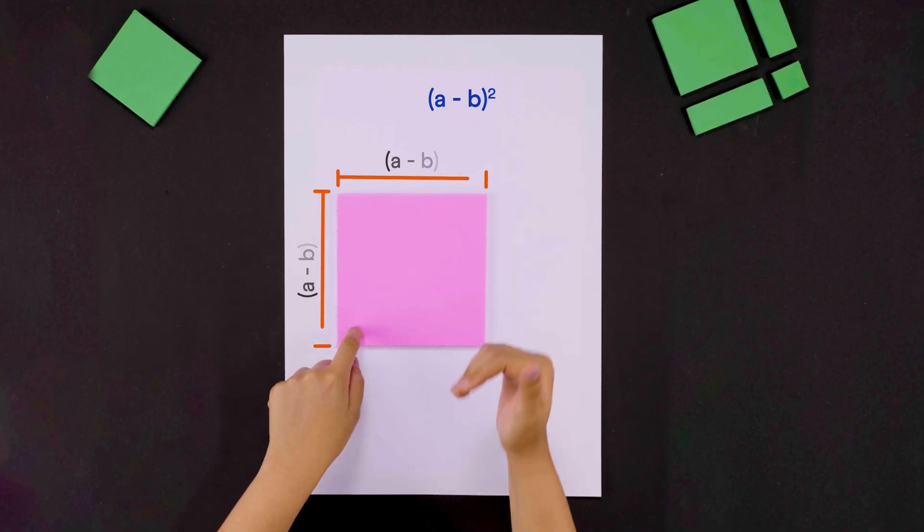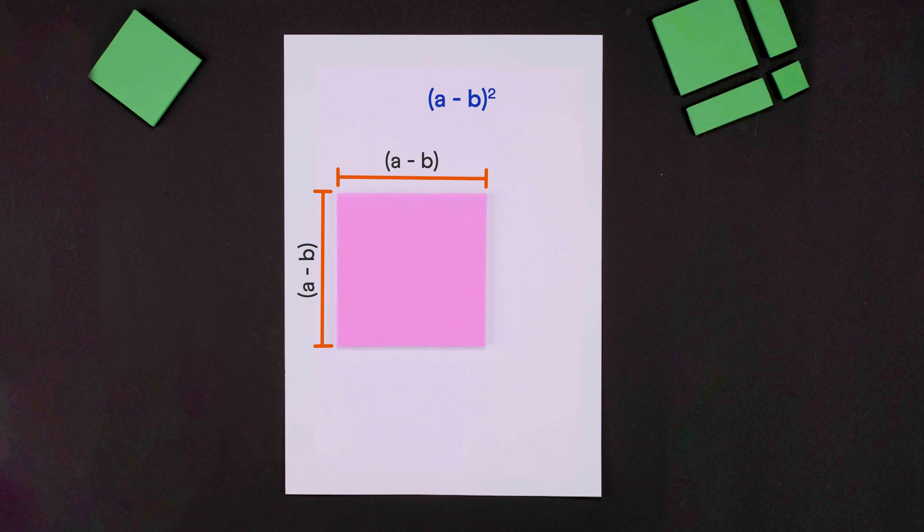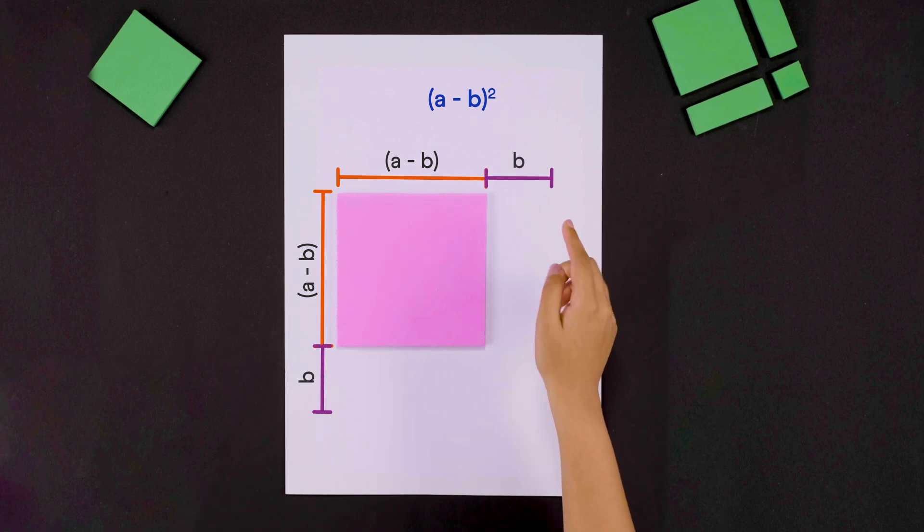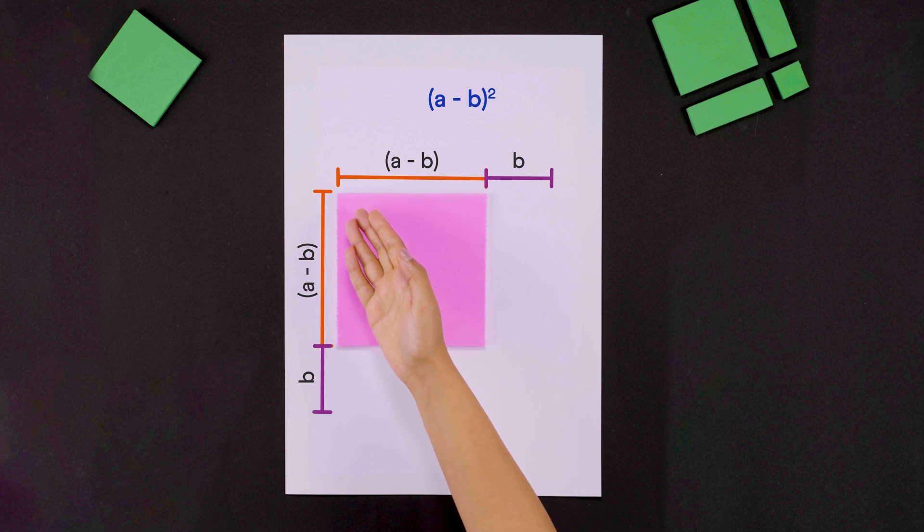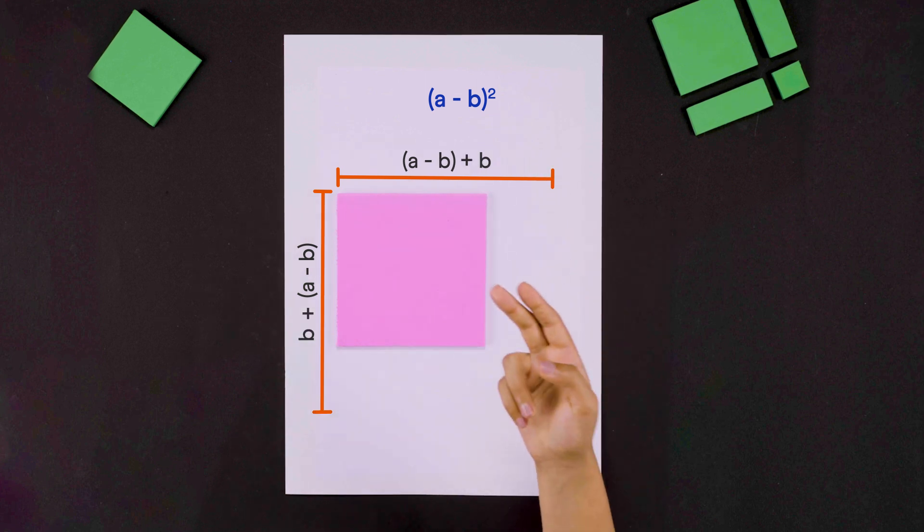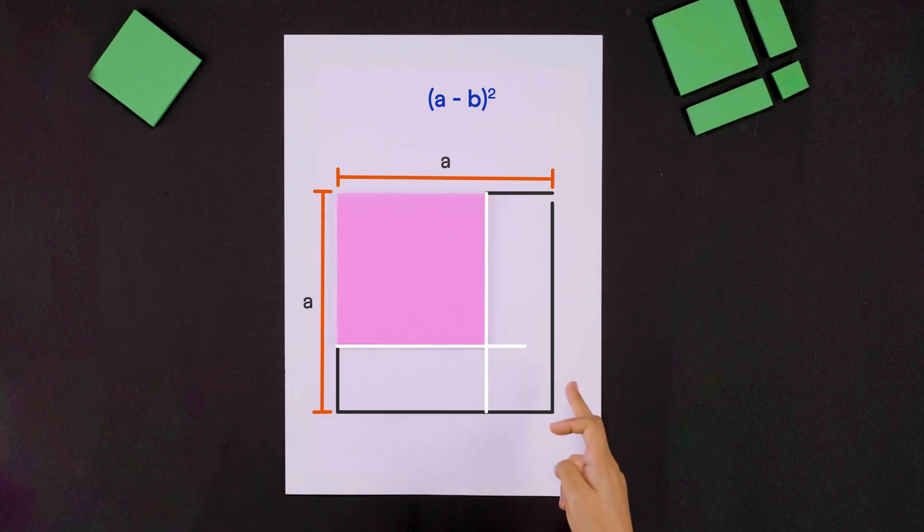In the same way, a-b whole squared is the area of a square with side a-b. What is its area? Let's add a length of b units to the side of this square. So these total lengths become a-b plus b which is equal to a units. Now let's draw these lines.